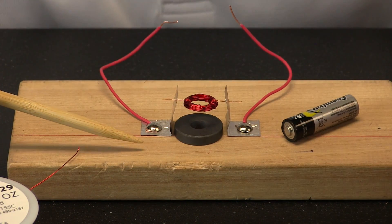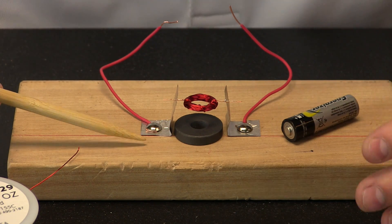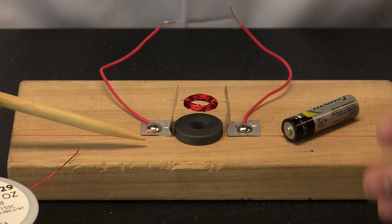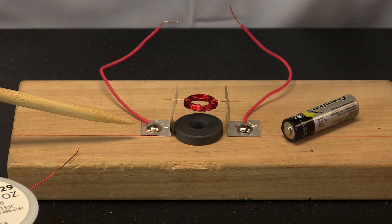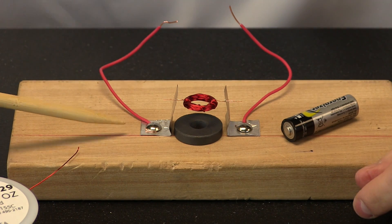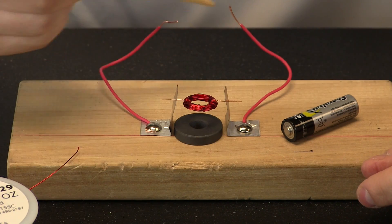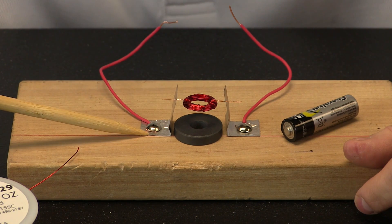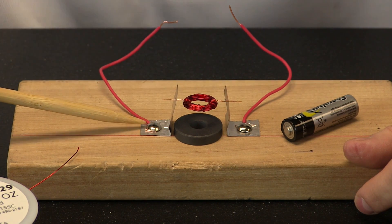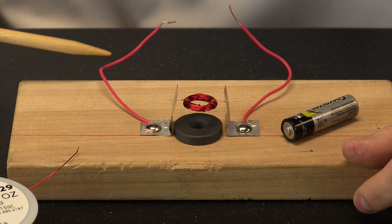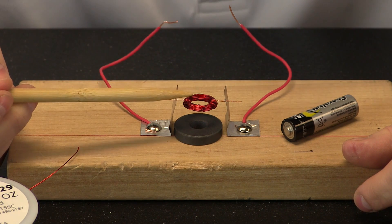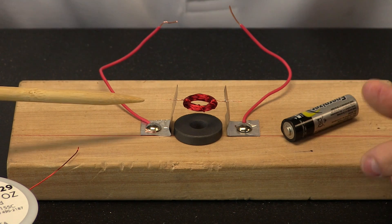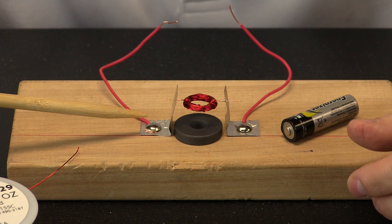So our setup for this electric motor is pretty simple. Everything we use needs to carry electricity. And that electricity must travel in a circle, scientists call a circuit. So we have a metal tab, we have a metal push pin, we have this metal wire and we have this coil of copper. Everything is metal and all of those carry electricity.